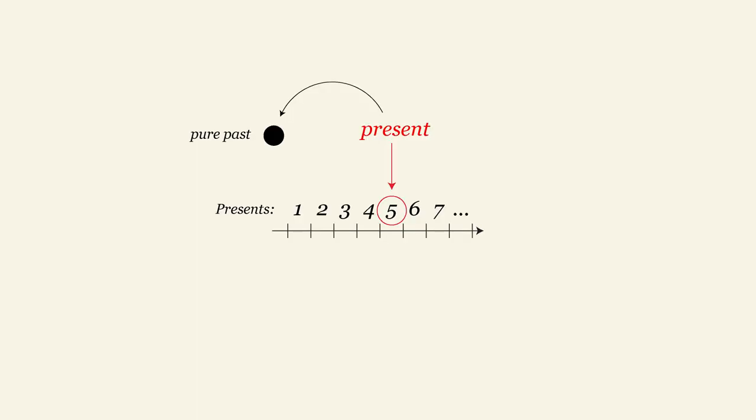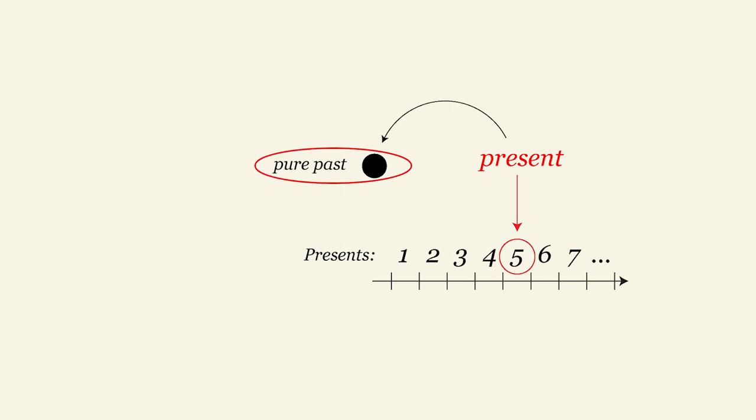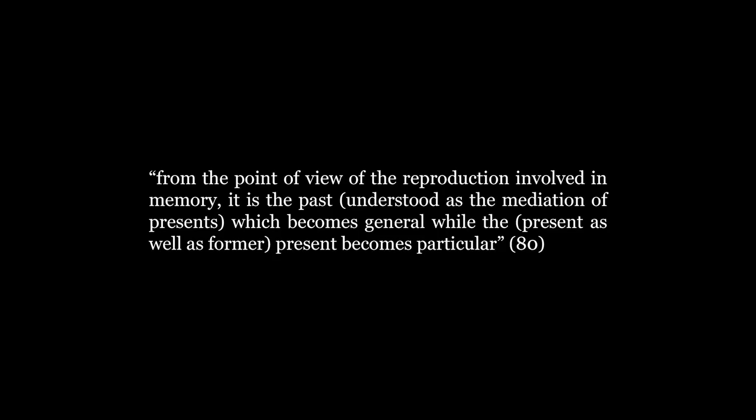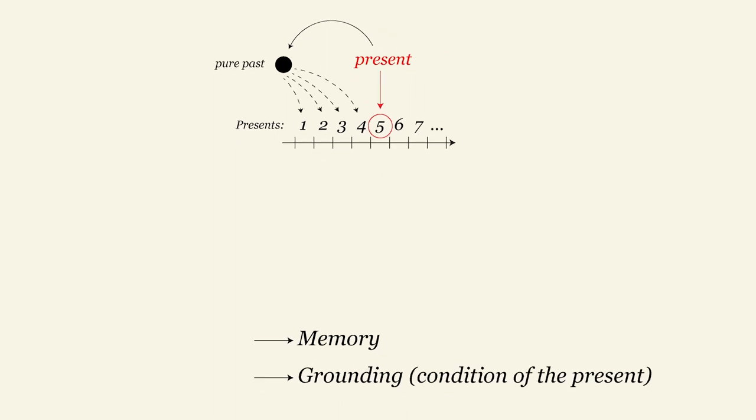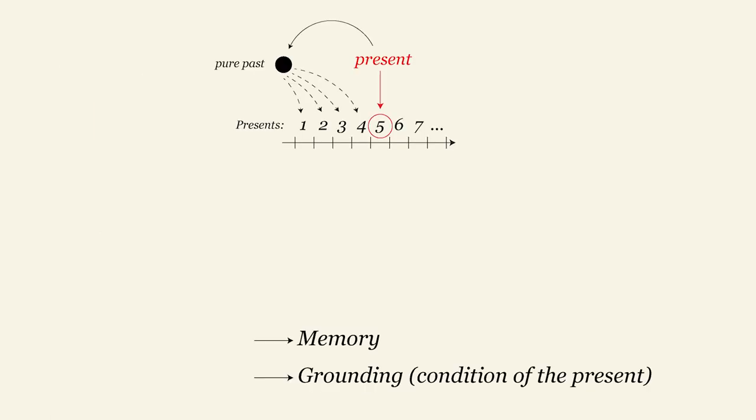This new synthesis is grounded in the past. While in the first synthesis the living present was central, now it is the past in its pure form, which takes the lead. From the point of view of the reproduction involved in memory, it is the past, understood as the mediation of present, which becomes general, while the present as well as former present becomes particular. The synthesis of memory is said to ground the passive synthesis of imagination or habit. Let us note the terminology that Deleuze uses here. At the level of habits, time is founded, meaning that this is where a concrete experience begins. At the level of memory, time is grounded, meaning that the present grounds itself in the past, which is then defined as the condition of the present.